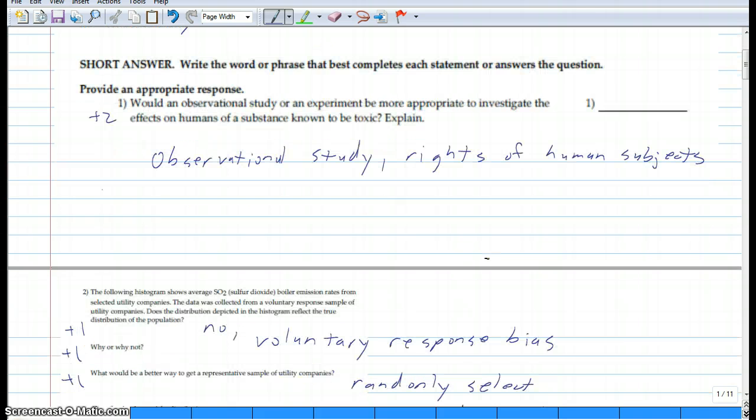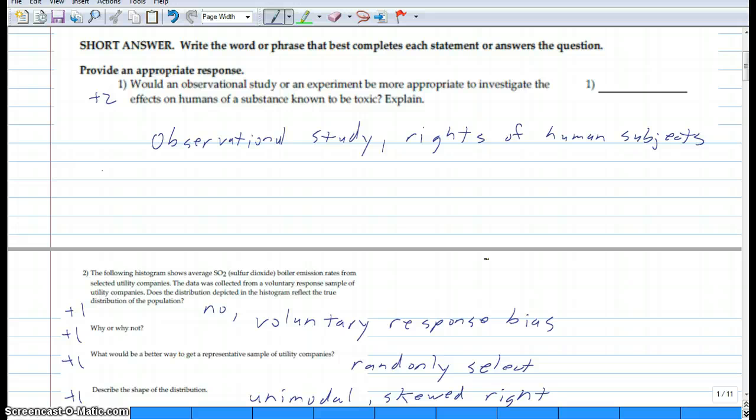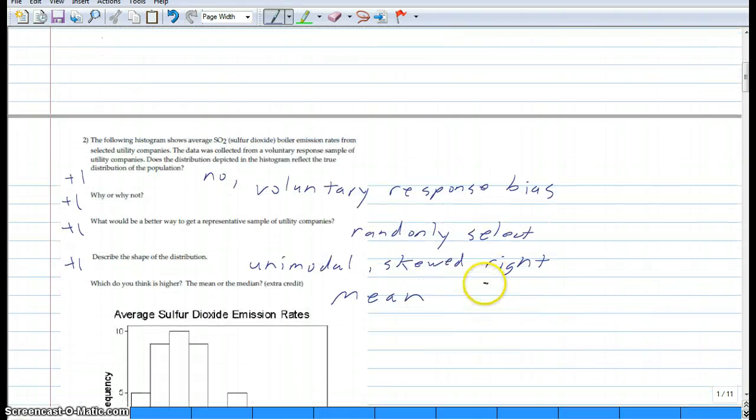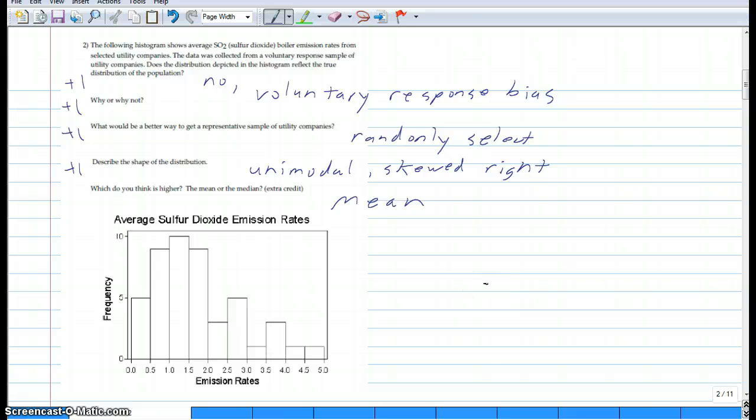Explain obviously don't hurt them or violate rights of human subjects. Almost everybody got that right as well. It's not representative, gets the voluntary response bias. How would you fix it? Make it random.